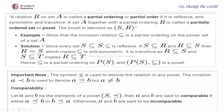Note: the symbol ≤ is used to denote a relation in any poset. The notation 'A < B' means A ≤ B but A ≠ B. Comparability: let A and B be elements of a poset (S, ≤). Then A and B are said to be comparable if either A ≤ B or B ≤ A. Two elements are comparable whenever either (A, B) or (B, A) is in the relation. Otherwise, we say they are incomparable.